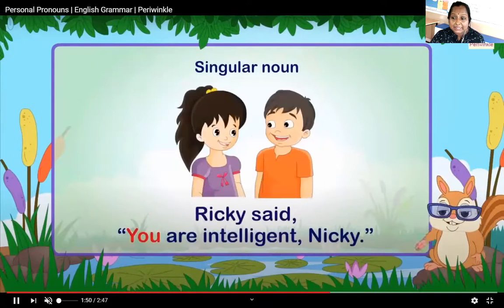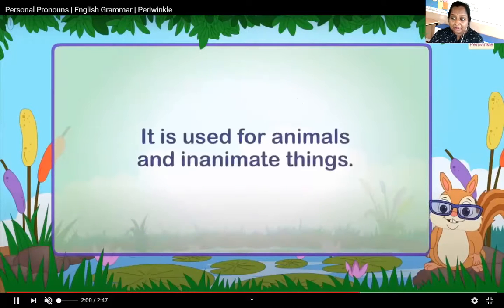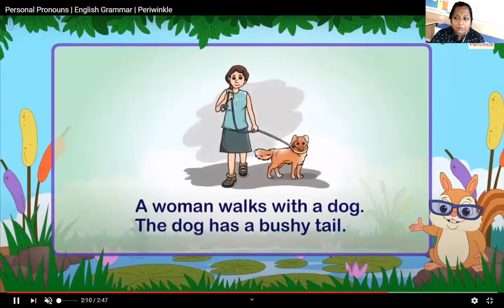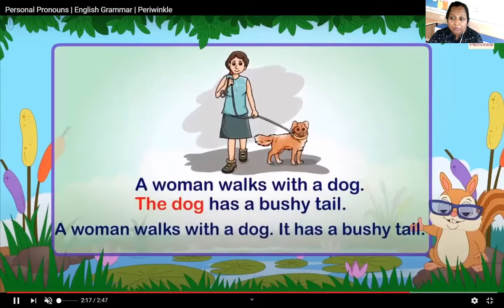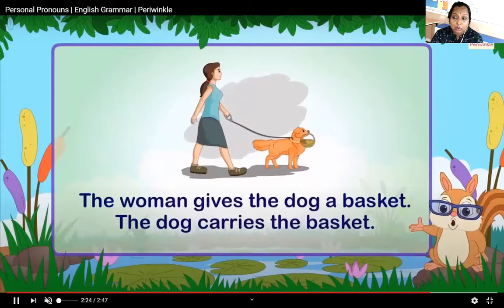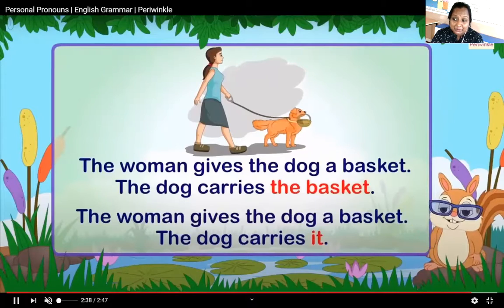Singular example — Ricky said: 'You are intelligent, Nikki.' Plural example — the coach said: 'I have faith in all of you.' 'It' is used for animals and inanimate things. Example: 'A woman walks a dog. It has a bushy tail' — here the dog is replaced with 'it'. 'The woman gives the dog a basket. The dog carries it.' Here the basket is replaced by 'it' because it is a thing.